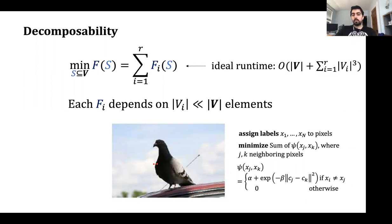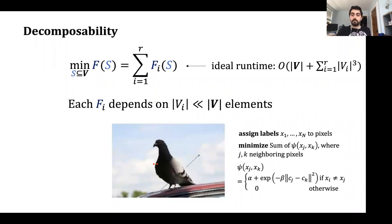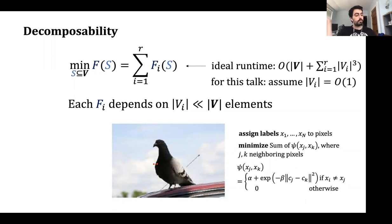What is the ideal runtime to solve this decomposable problem? Without decomposability the runtime is O(|V|³). The ideal runtime we would expect would be linear in V, then paying |V_i|³ for each individual function F_i — which are much smaller. To simplify this talk, we assume the |V_i| are O(1), so this ideal runtime becomes O(R).